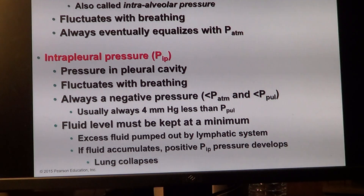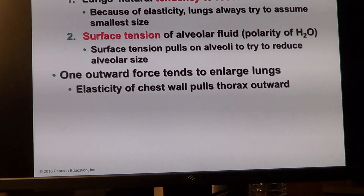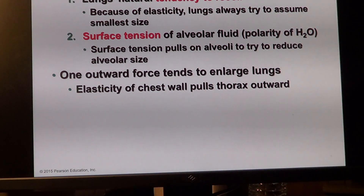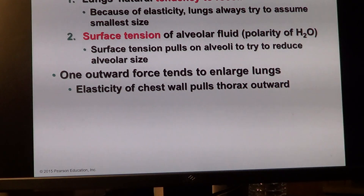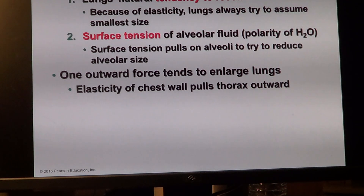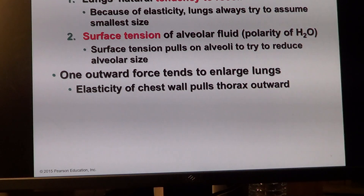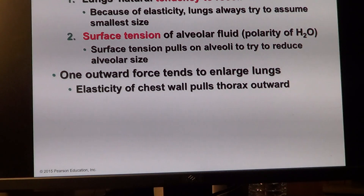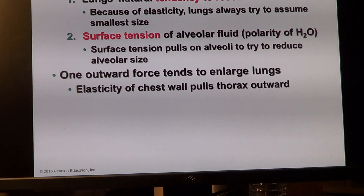In addition to negative intrapleural pressure, the other thing that prevents the lung from collapsing is the natural tendency to recoil. Remember those elastic fibers along with capillaries that surround alveolar sacs on the internal and external surface — those elastic fibers make alveolar sacs able to recoil and keep them in ball-like shape.